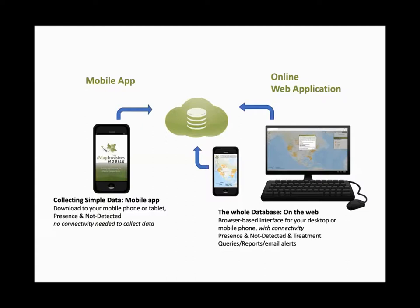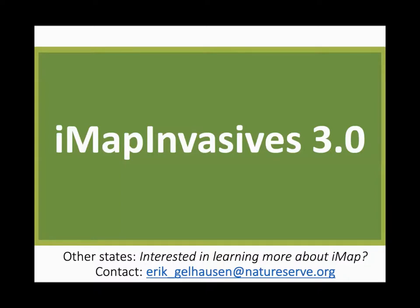The mobile app works offline: download it with connectivity, use it in the middle of the Adirondacks with no signal, then upload your records when you return to a hotspot. The system has developed impressively over the years and people are very comfortable using it. This coverage is New York-centric — IMAP is designed to be used by other states as well; contact eric_gelhausen@natureserve.org for out-of-state information.